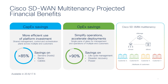MSPs benefit from both CapEx and OpEx savings by leveraging Cisco SD-WAN multi-tenancy. You can save on capital expenses by reducing servers, rack space, and cables for controllers, and gain operational savings with simplified and optimized network operations via a common dashboard across tenants.